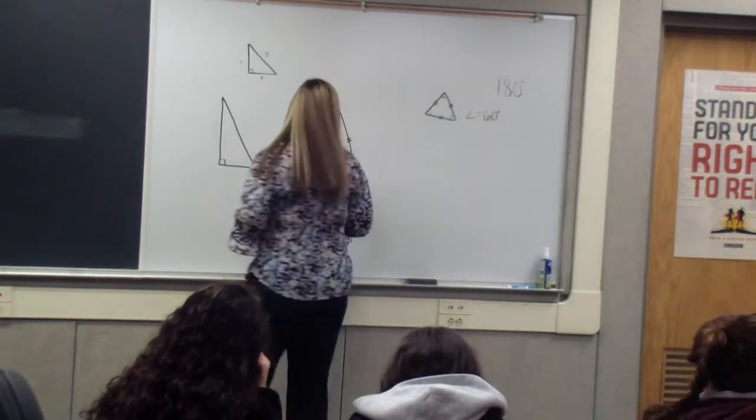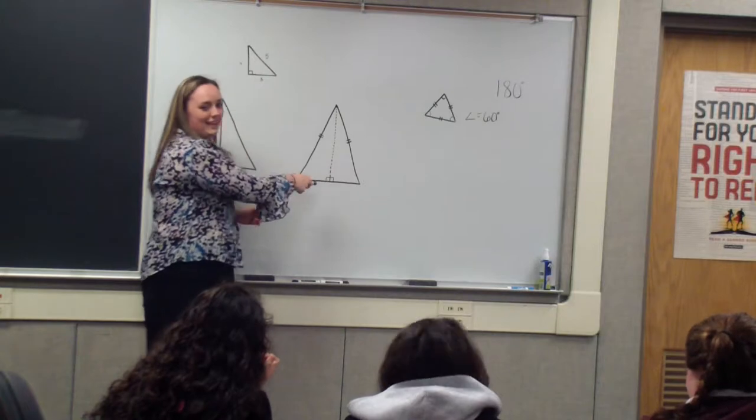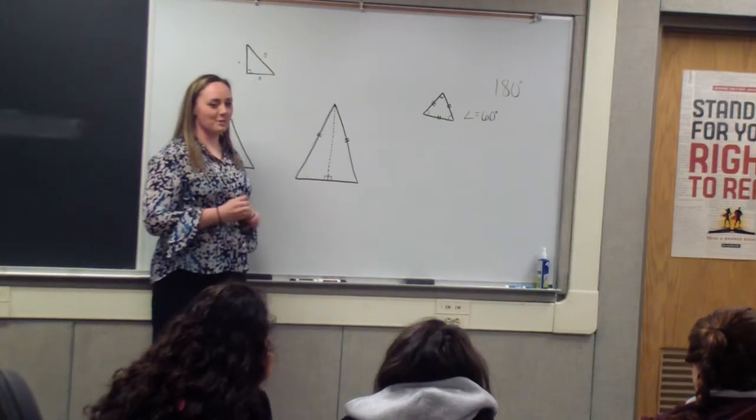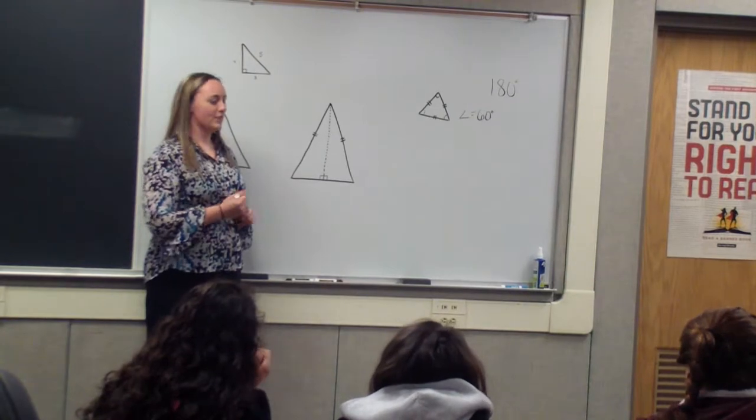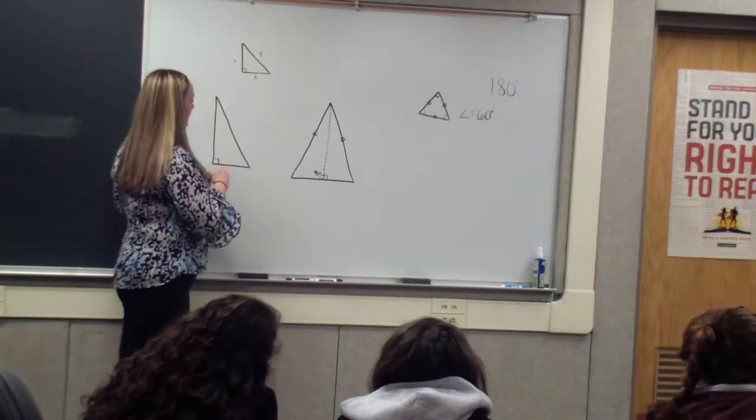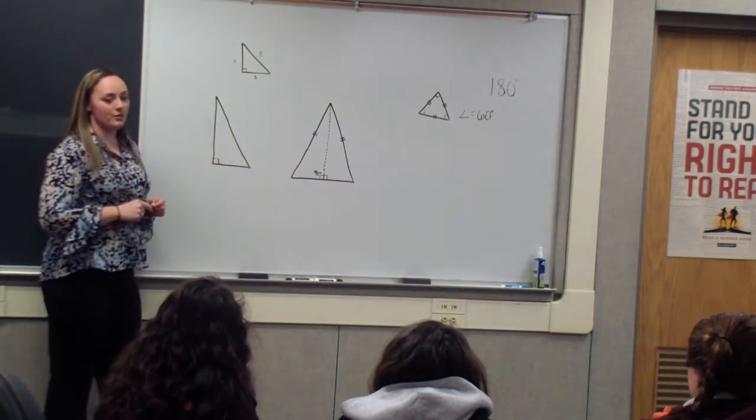So if we move to the isosceles triangle, Elyse, what does that square mean again? It means it's the right angle. And how many degrees does that mean? Ninety. So if we look inside the isosceles triangle, where this dotted line is, it's the same as a right triangle.